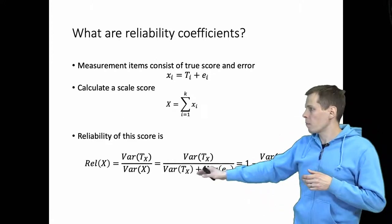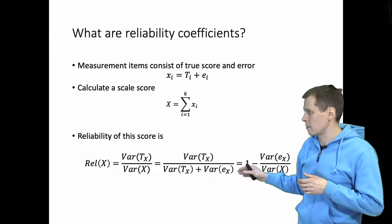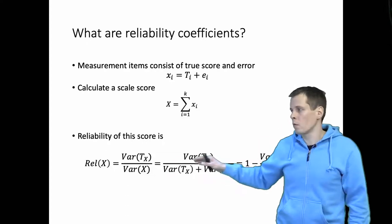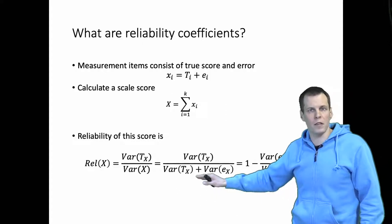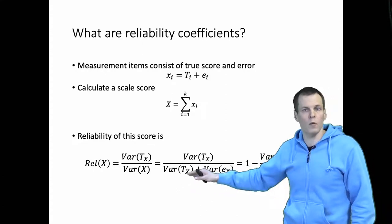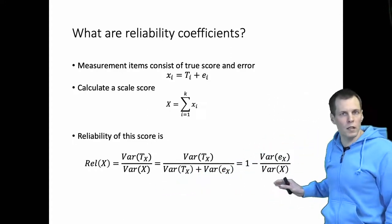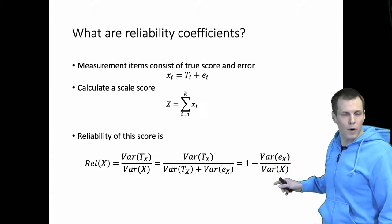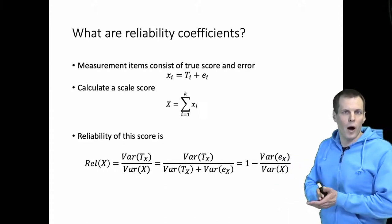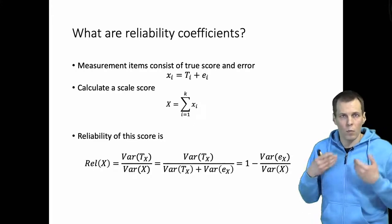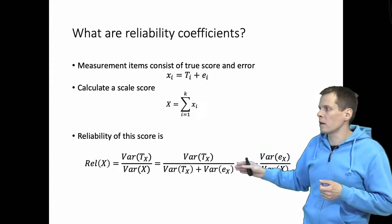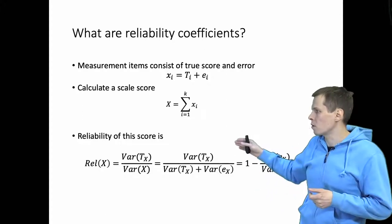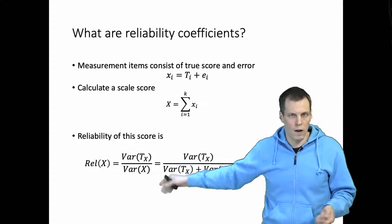Another way of calculating the reliability coefficient is based on estimates: variation of estimated true score divided by variation of scale scores. We can also calculate it as variation of true scores divided by variation of true scores plus variation of error scores. A third way is to calculate unreliability — variation of error scores divided by total variation — and subtract that from one. All these forms differ in how true score variation, error variation, or scale score variation is calculated, but they work the same way.